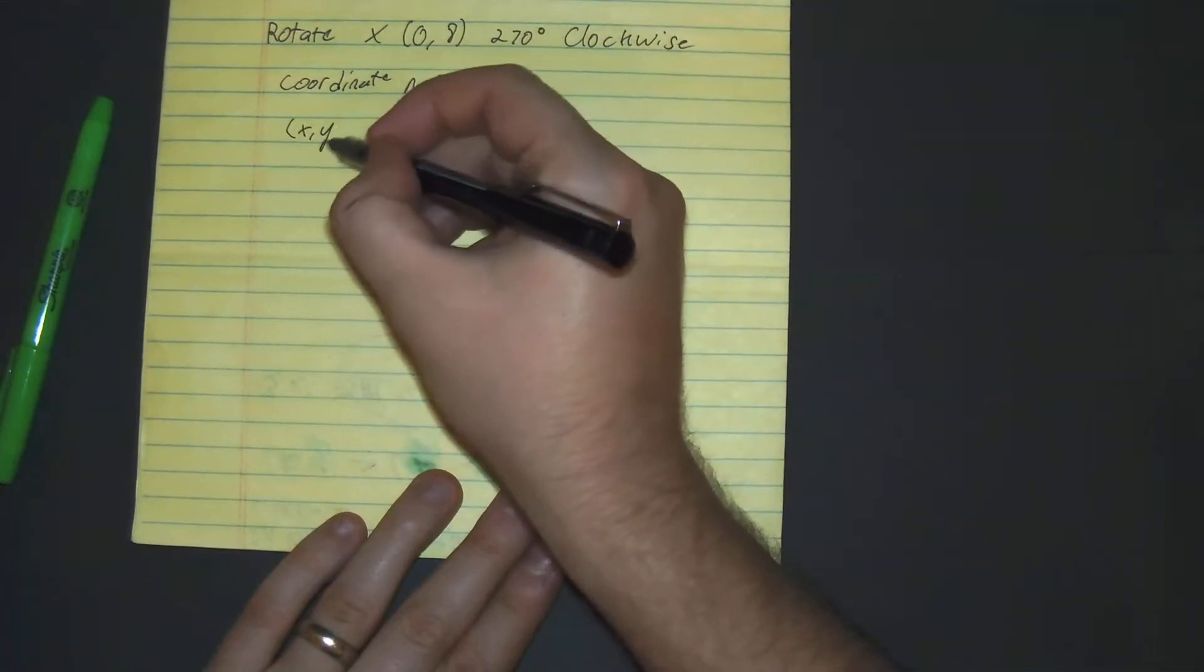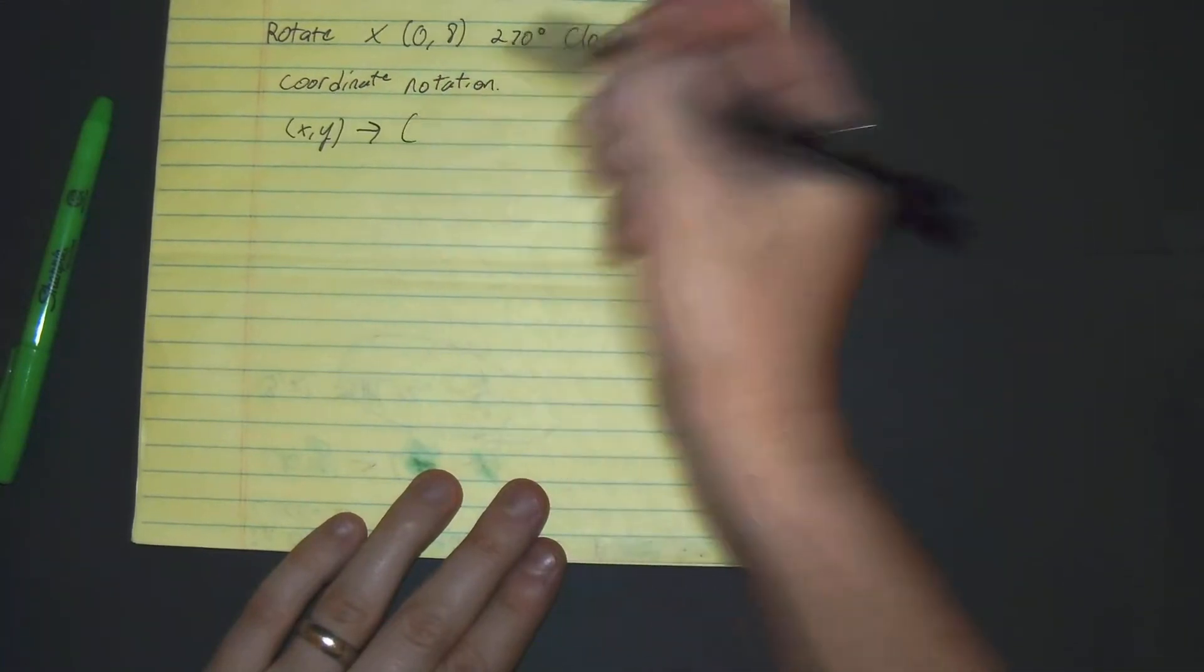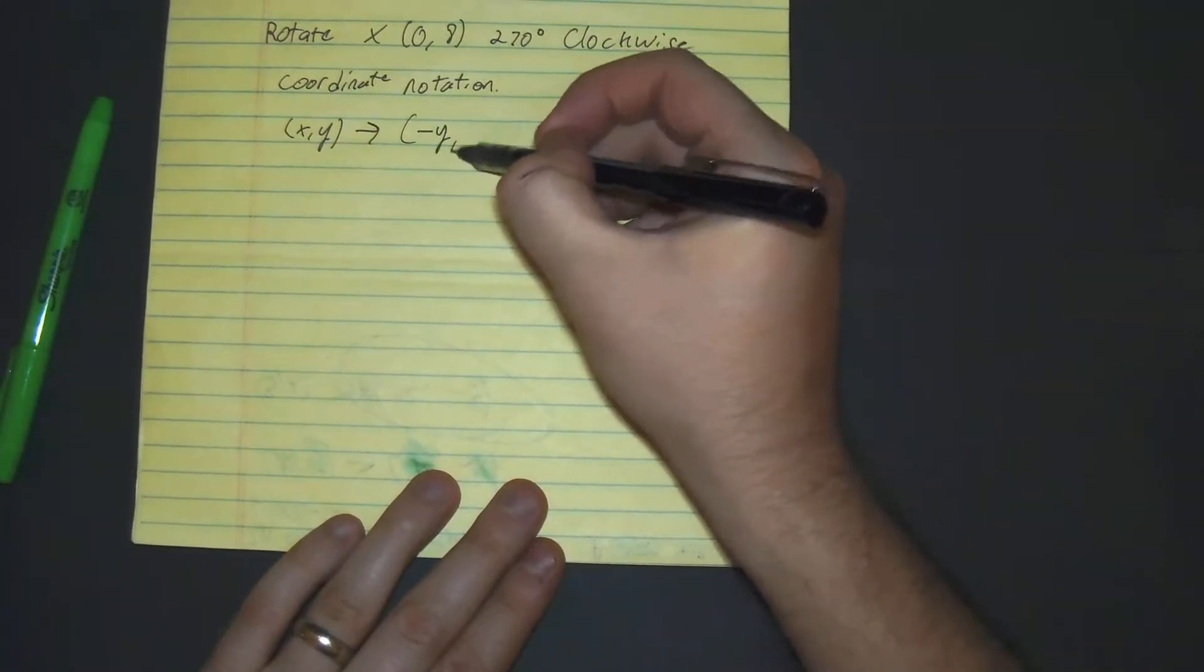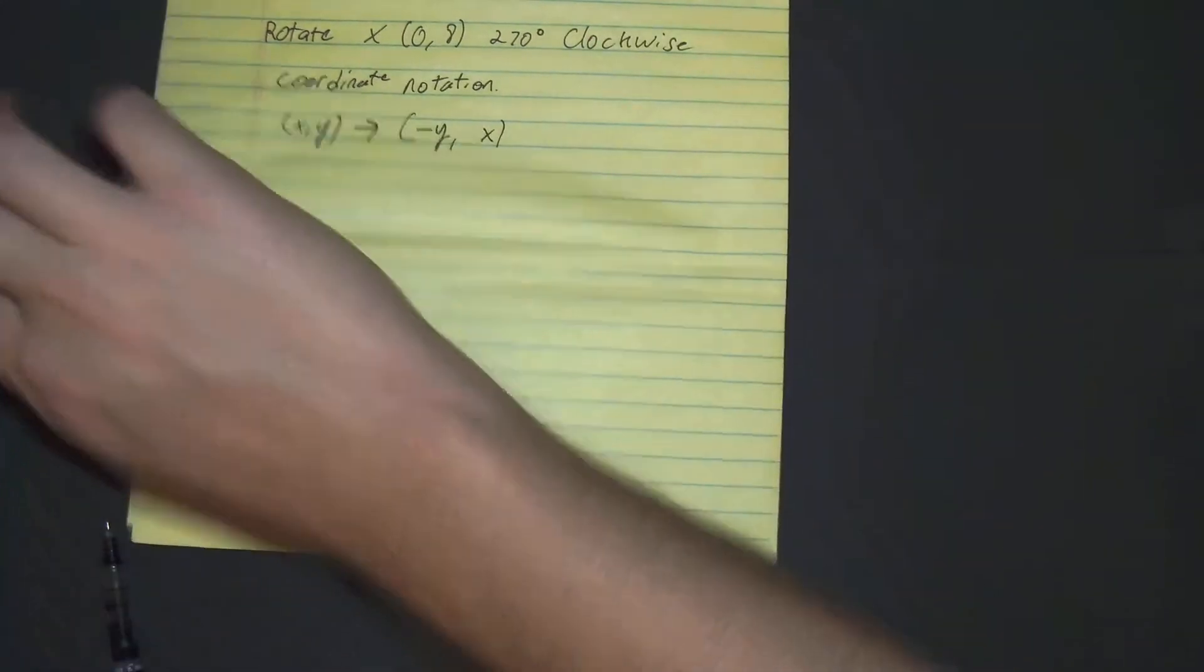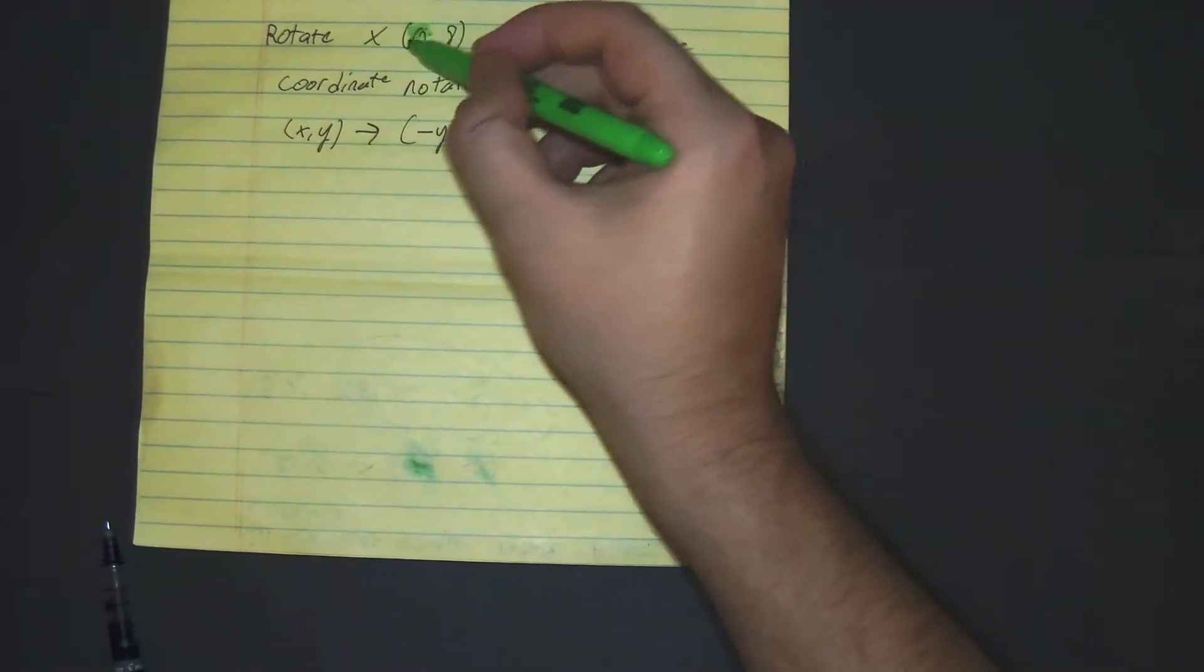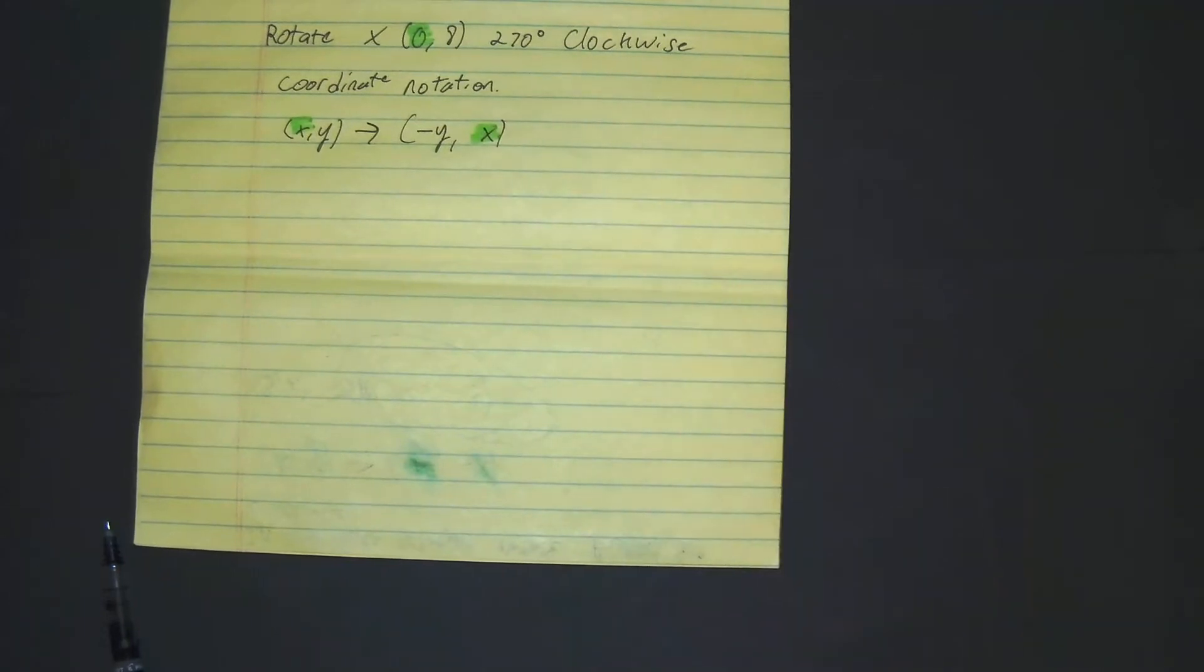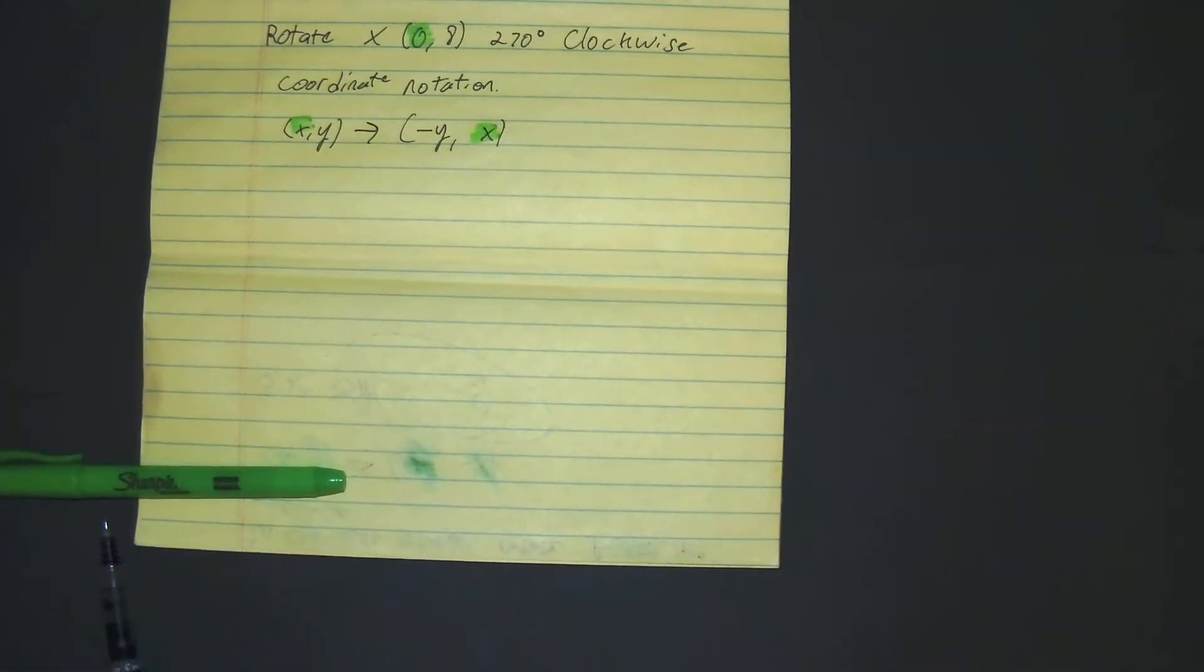Coordinate notation states x, y becomes negative y, x. Okay, our 0 is x, and our 8 is our y.